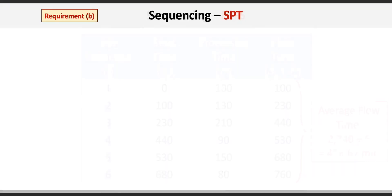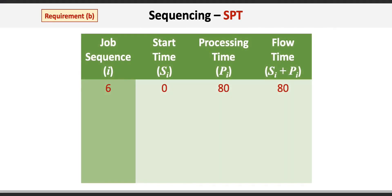Now on to requirement B using the SPT or shortest processing time sequencing rule. We set up the same table, but our first job is the one with the lowest processing time. Job 6 has the lowest processing time at 80 minutes, so it starts at 0 minutes with a flow time of 80 minutes. The next shortest is job 4 at 90 minutes; it starts at 80 minutes with a flow time of 170 minutes.